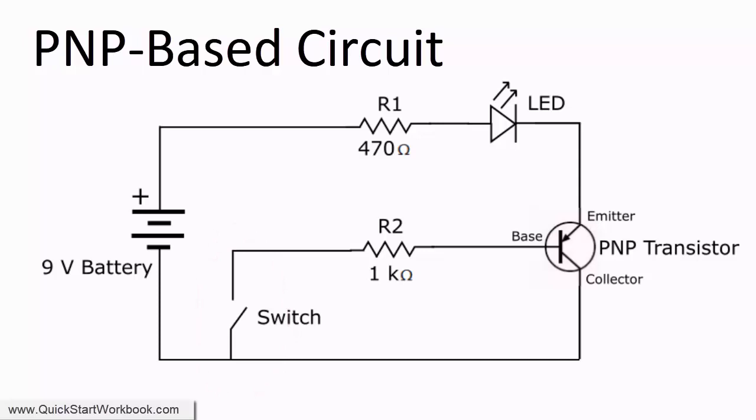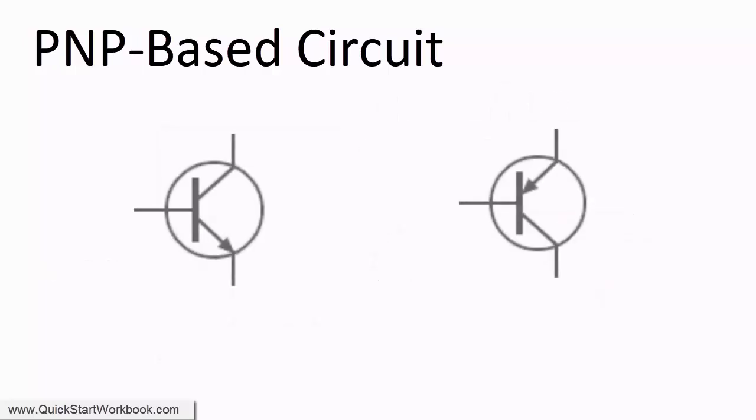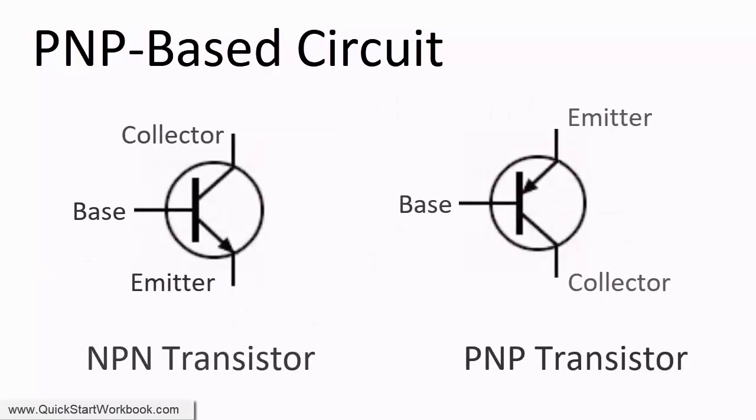Another thing that is different between an NPN transistor is that the direction of their output current is different. In an NPN transistor, output current flows from the collector to the emitter. Whereas in a PNP transistor, output current flows from the emitter to the collector.